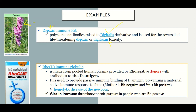We have another example called Rho-D immune globulin, and in the market you'll find it as RhoGam. This one is made from pooled human serum or human plasma donated by Rh-negative donors. The D antigen is the one that gives us a positive — for example, blood group A positive — and those without the D antigen are, for example, blood group A negative.